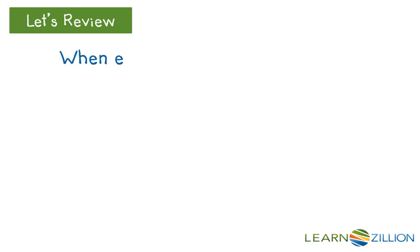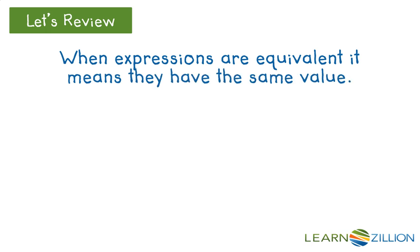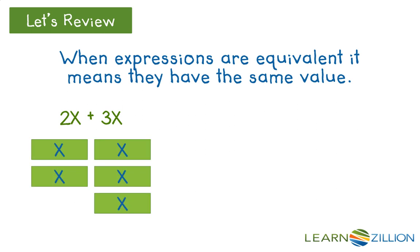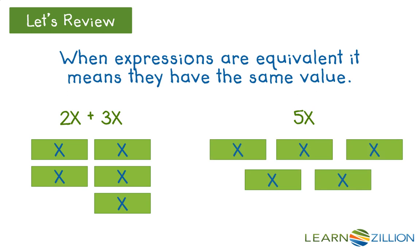Let's review. When expressions are equivalent, it means they have the same value. In this example, we have 2x plus 3x. How else could we write this? Since there are five total groups of x, we could write this as 5x. These both have the same value, so they would be equivalent, but we wrote our original expression in fewer terms, so we simplified it.